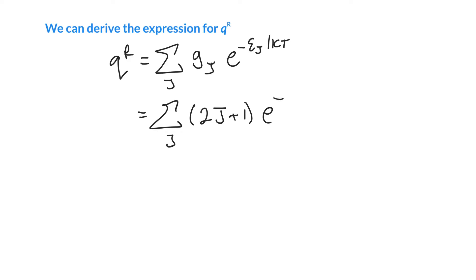times e to the minus the energy of each level j over kT. We know that the expression can be expanded out, so g_j is 2j+1, and e to the minus the energy is b times j(j+1) - that's why I prefer that rotational constant form over Atkins's form - all divided by kT.